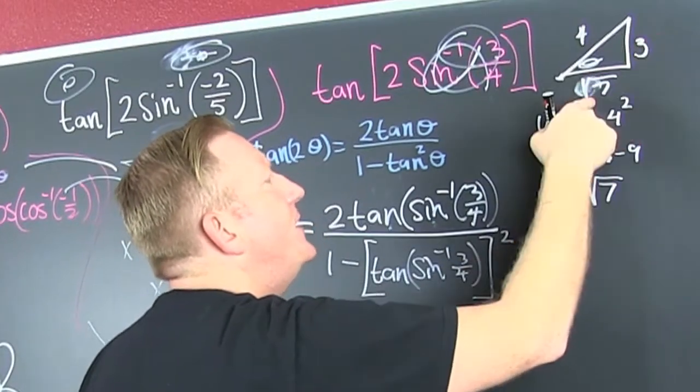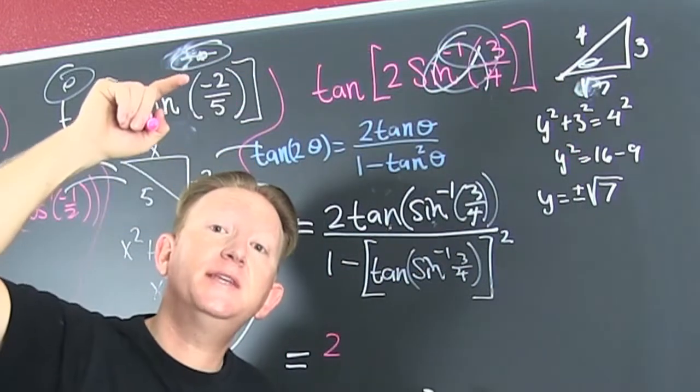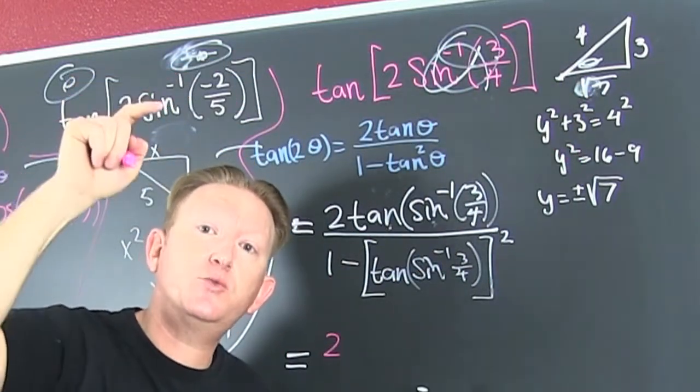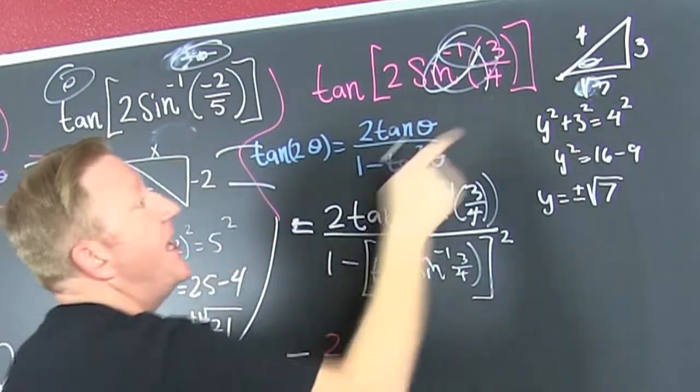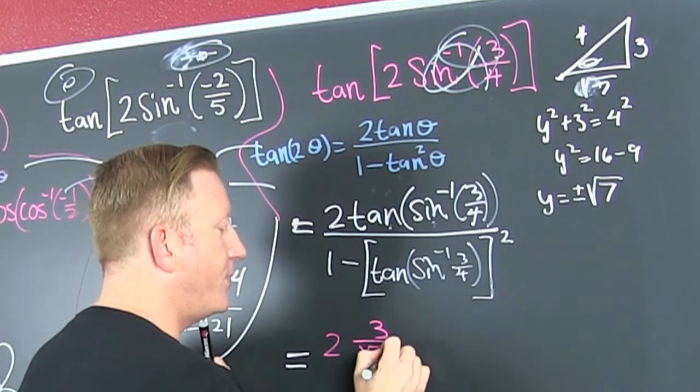So the tangent is that three over that seven, because the tangent is the opposite over the adjacent. Please get proficient with your trig. So the tangent is the opposite over the adjacent. So that's three over the square root of seven.